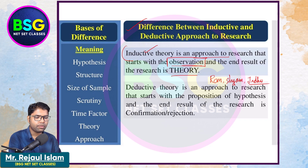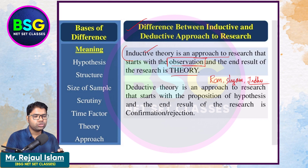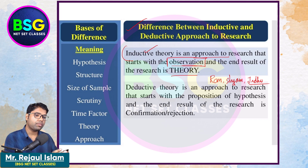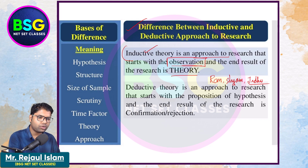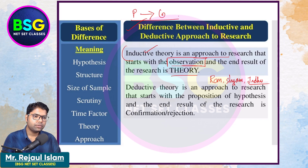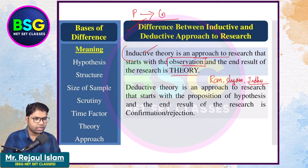The theory we arrive at is generally applicable. So, from the particular — Ram, Sham — we build up a general theory. This is the truth: particular to general, particular to general. So this is the inductive theory. Now the next question is deductive theory.